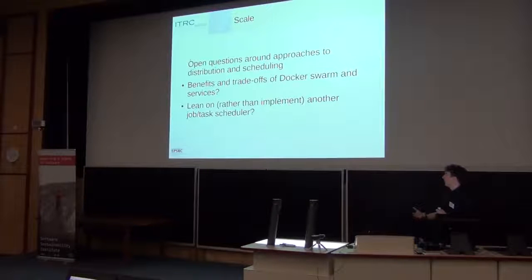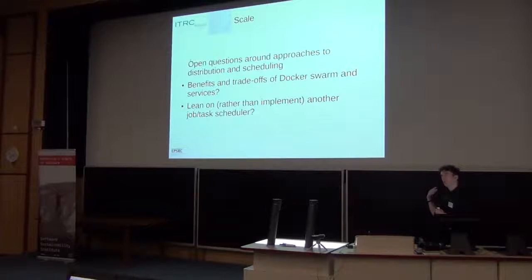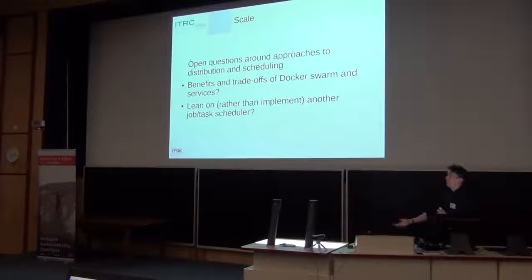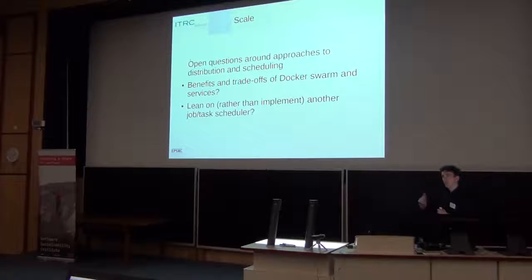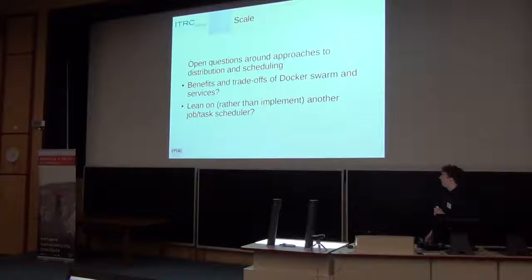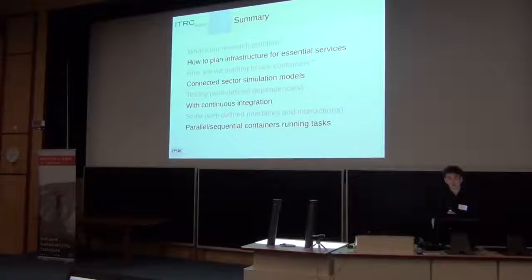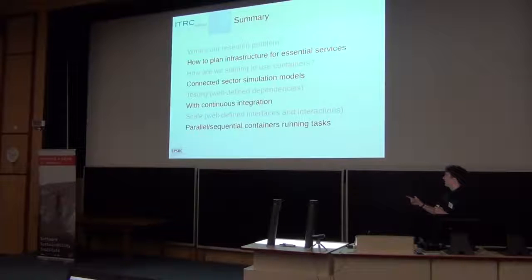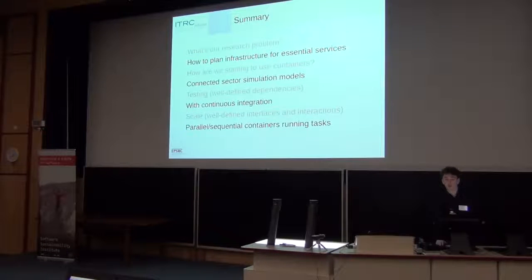It's useful today to talk about the problems people are having thinking through workflow and thinking through distributing tasks to containers — these are open questions. The trade-offs of Docker Swarm versus other services, the fact that Docker is really configured for microservice networked architecture, and how we should implement a dynamic graph of tasks that we need to run as we go through our systems model — these are open questions. Quick summary: we're trying to plan infrastructure for essential services, to connect sector simulation models using continuous integration and parallel tasks. Thank you very much.